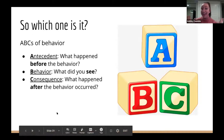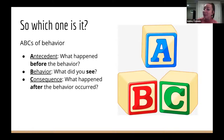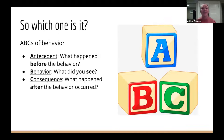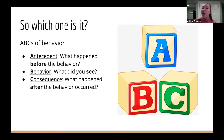Now that we know about functions of behavior, reinforcement, and ignoring problem behavior, let's do a quick overview of the ABCs of behavior. We'll be doing another webinar in this series going into more detail, but the ABCs help us figure out which function it is. ABCs stand for Antecedent, Behavior, and Consequence. The antecedent is what happened before the behavior; the behavior is what we observed; and the consequence is what happened after. These three pieces help us figure out the function of the behavior.